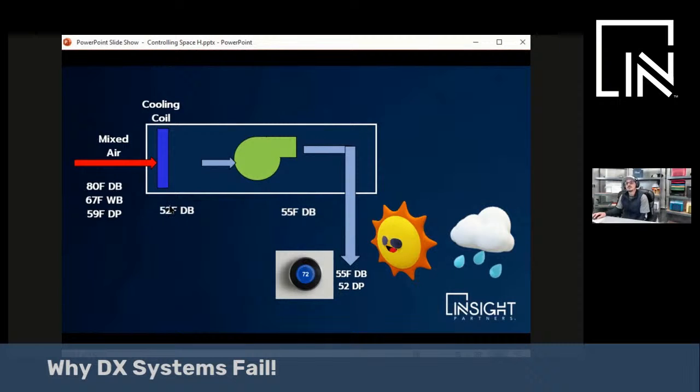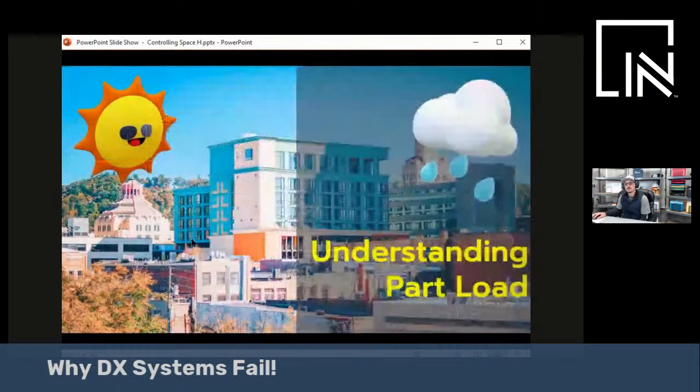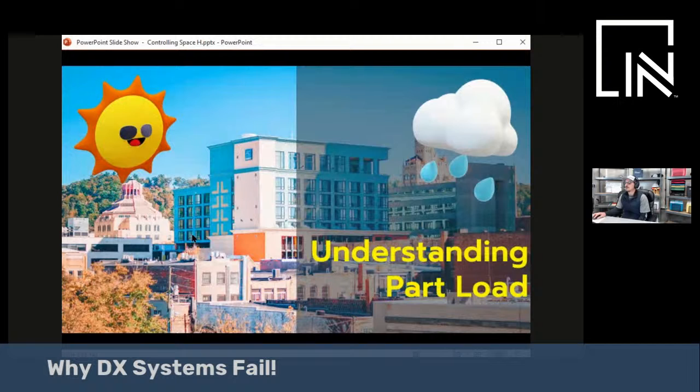At part-load conditions, if you're not running the evaporator coil, you're not dehumidifying. And therein lies the problem with controlling humidity at all load conditions. To understand this scenario, you just have to understand part-load.